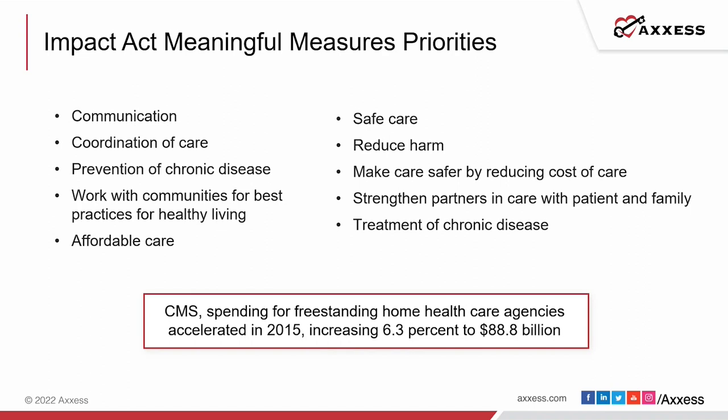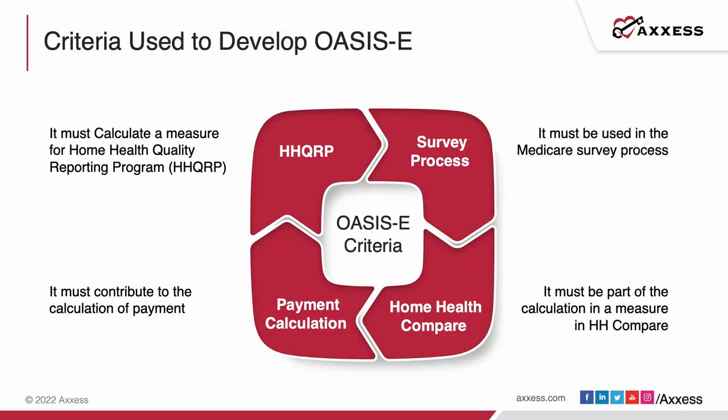The criteria used to develop OASIS E focused on calculating a measure for quality of care. CMS used HHQRP and survey findings to do that. The survey process is designed around looking at OASIS and determining whether we are using critical thinking skills in completing that assessment and making it useful for care planning. OASIS E was also put into place to contribute to the calculation of payment and is part of the calculation for Home Health Compare.